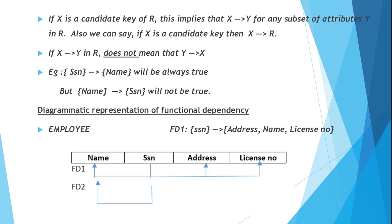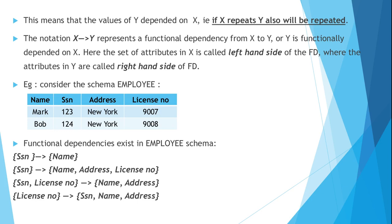Now for some properties of functional dependency. First: if X is a candidate key of R, meaning X is unique, this implies X→Y for any subset of attributes Y in R. That is, if X is a candidate key or primary key, then X→Y exists for every Y that is a subset of R. In our example, SSN is a candidate key, so there exists a functional dependency from SSN to any subset of attributes in the schema.